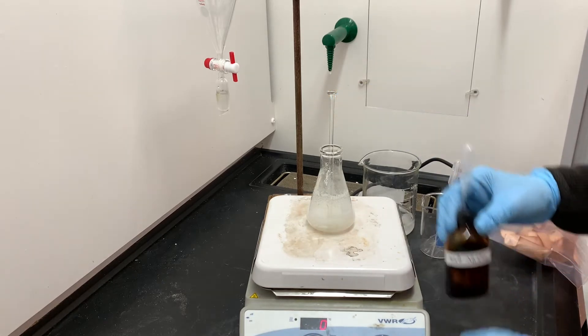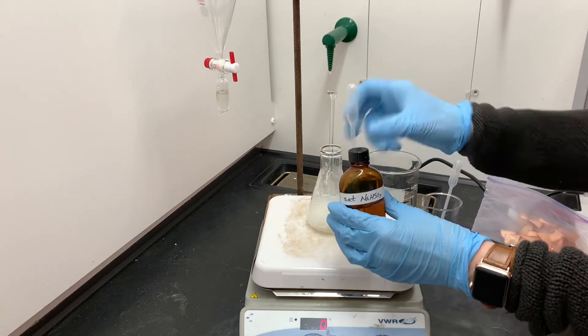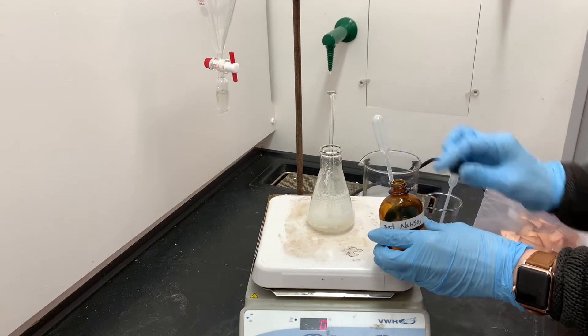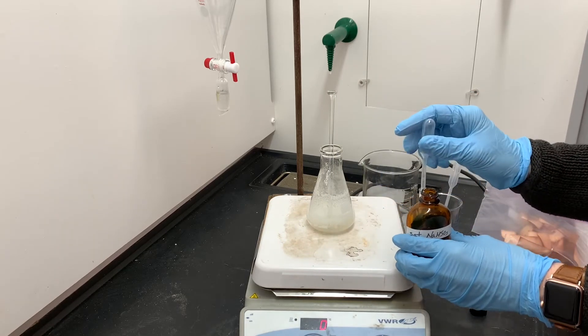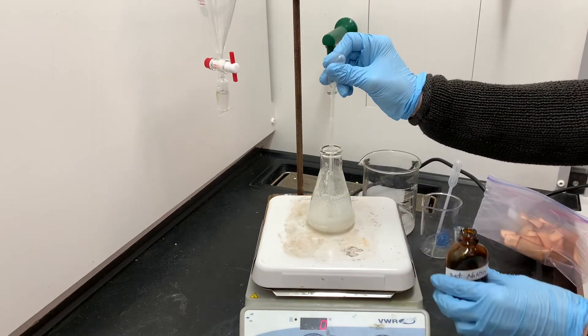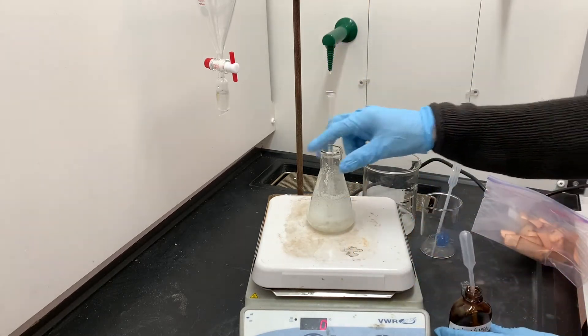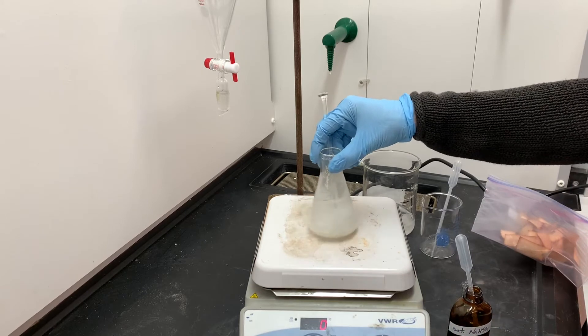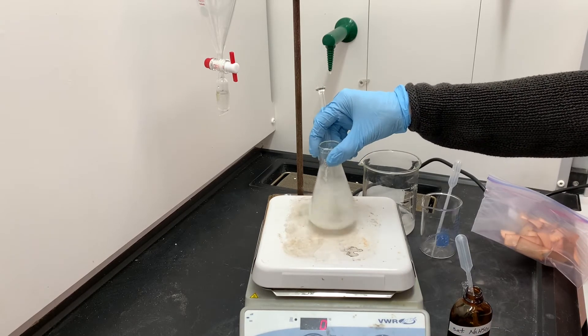To remove excess bleach, we'll be using a solution of saturated sodium bisulfite, NaHSO3. We're just going to continue adding the saturated sodium bisulfite solution until we get a negative test with the starch iodide paper. That means not a dark blue color change with the starch iodide paper.